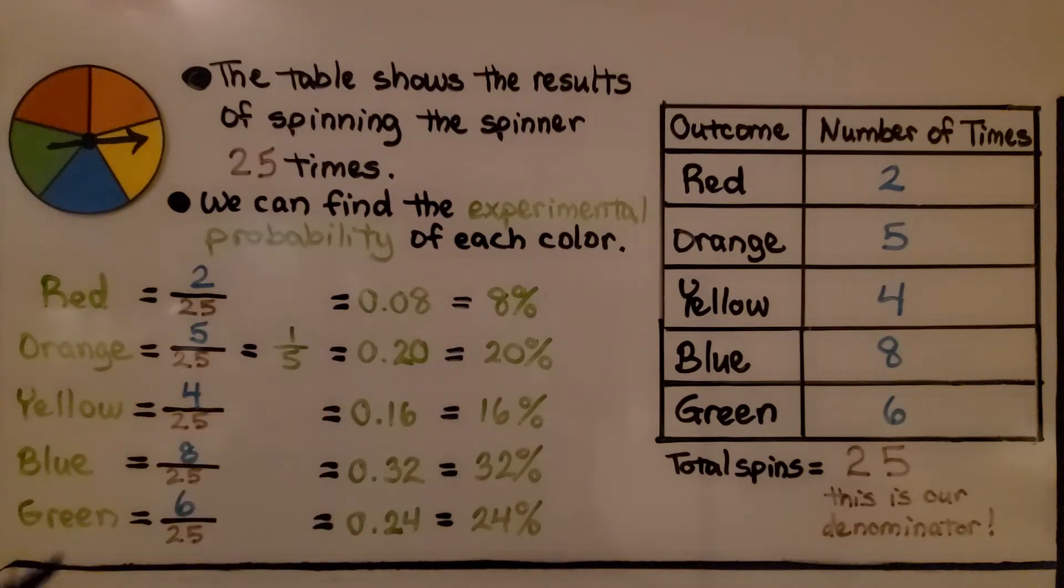For yellow, we have four twenty-fifths, sixteen hundredths, sixteen percent. Blue is eight twenty-fifths, thirty-two hundredths, thirty-two percent. Green is six twenty-fifths, which is twenty-four hundredths, which is twenty-four percent.